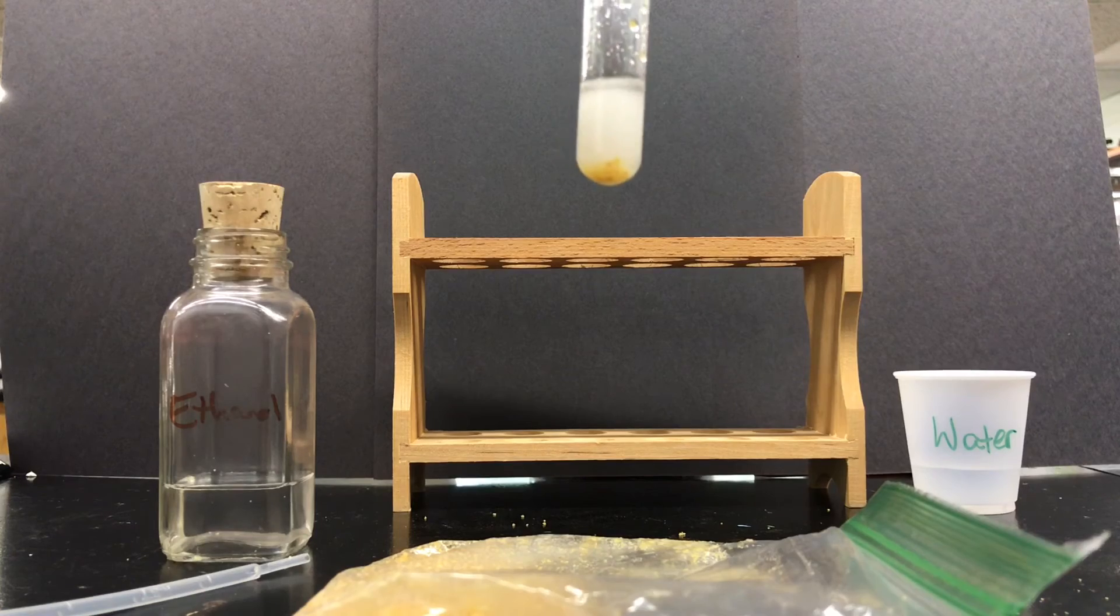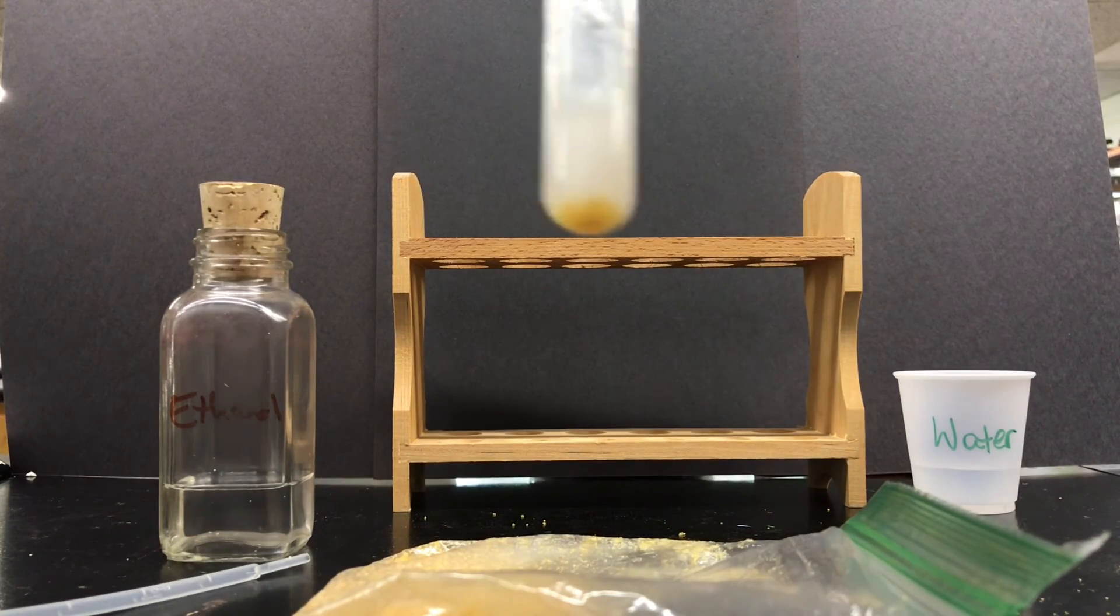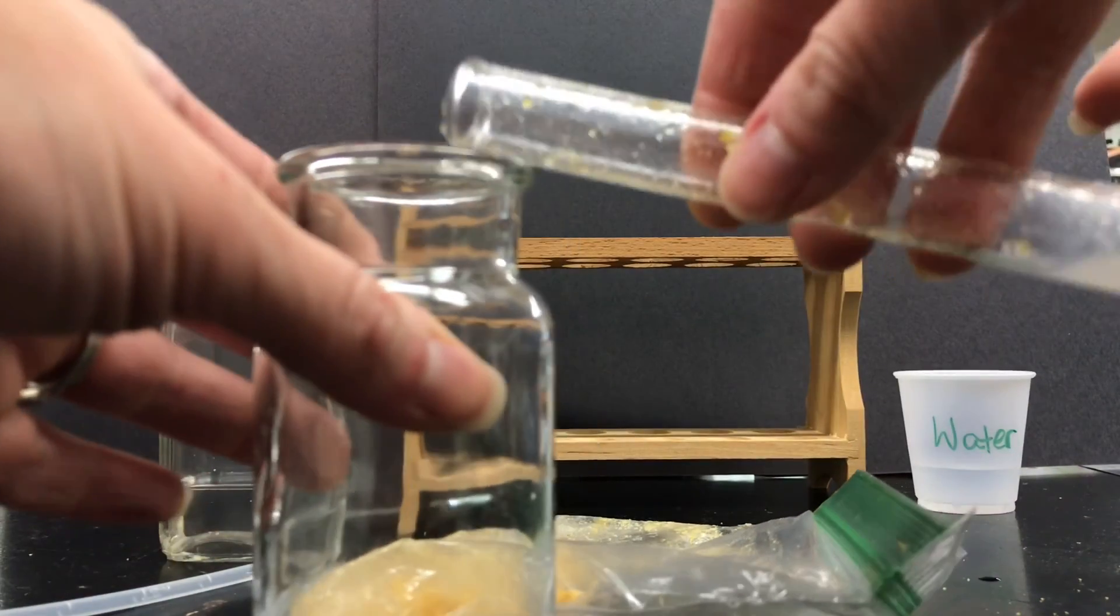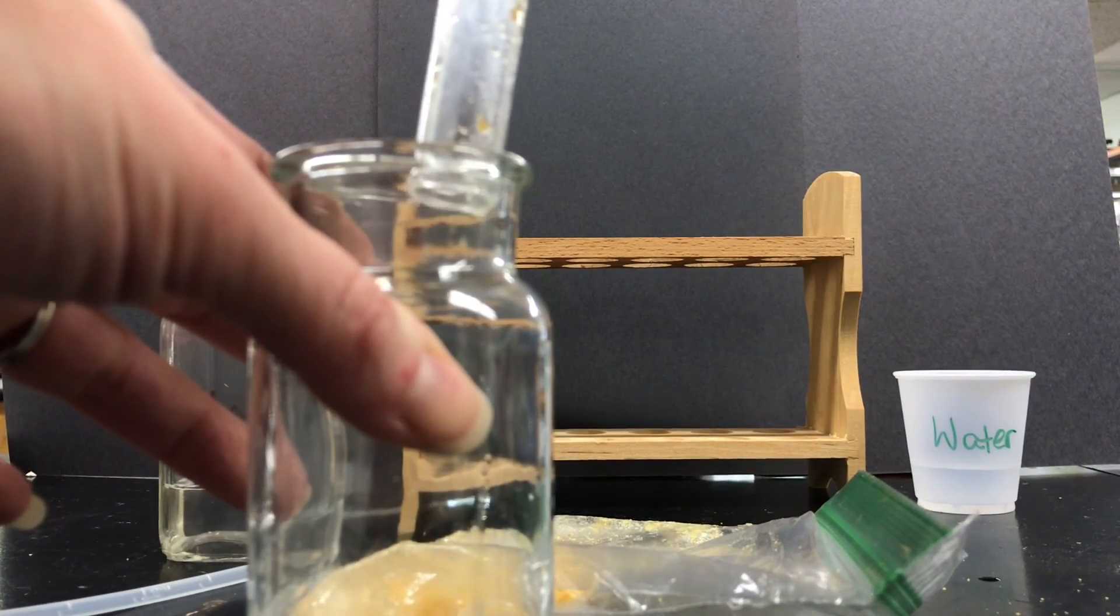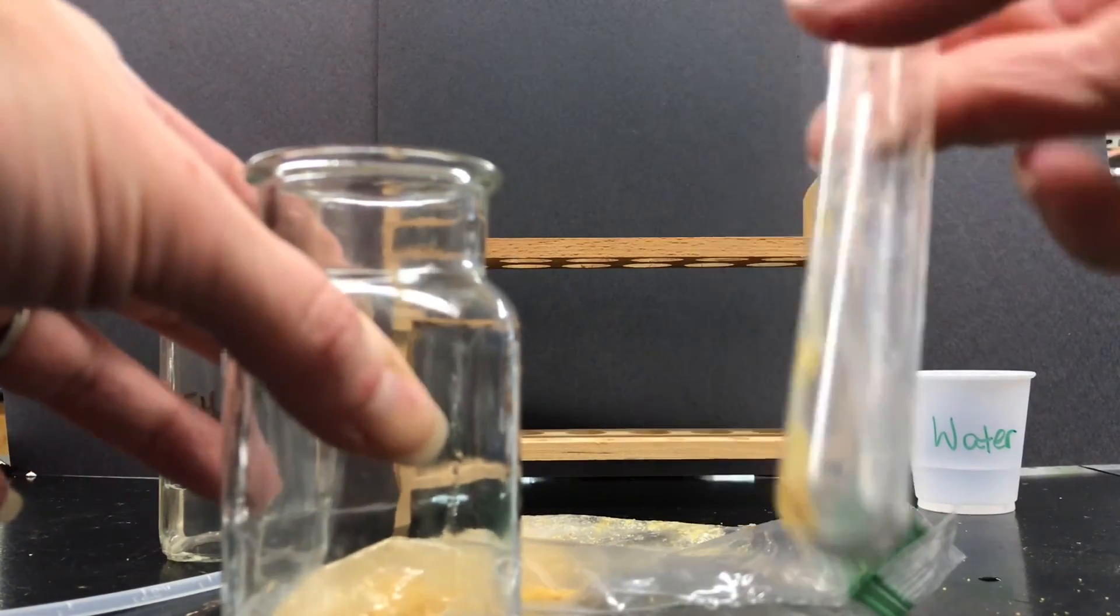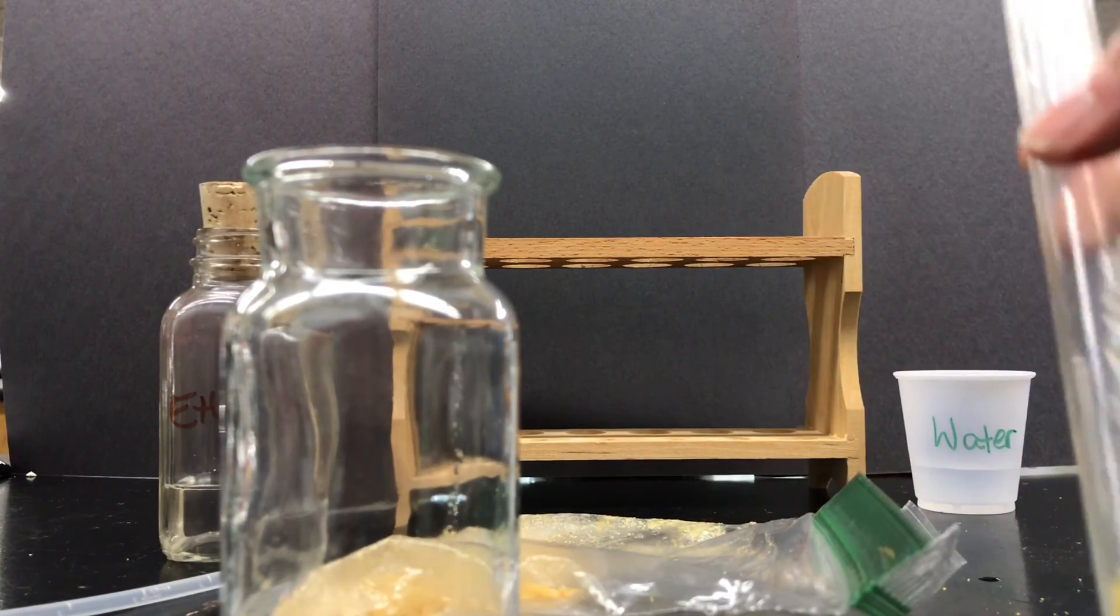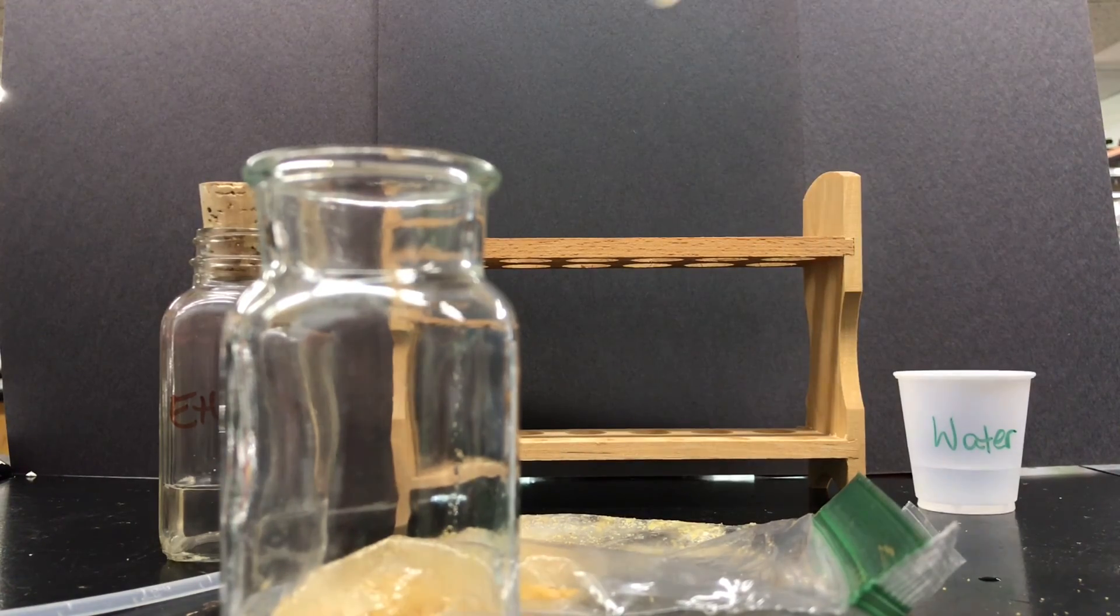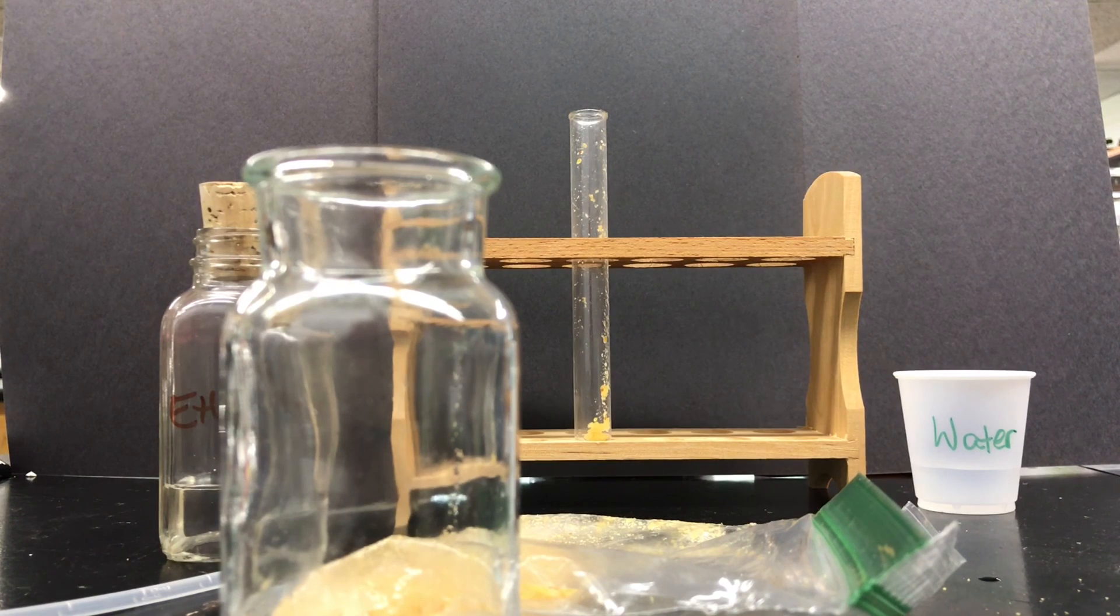when you are done you are going to take the liquid that is in your test tube and dump it into a waste container and then go clean out your test tube. Please do not dump your sample directly into the drain of the sink and there you have it the emulsion test for lipids yay